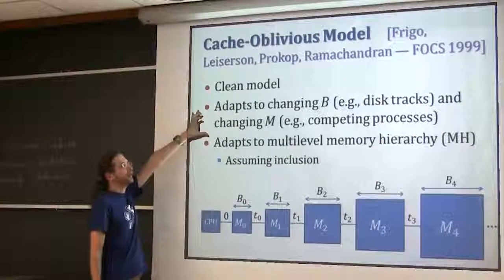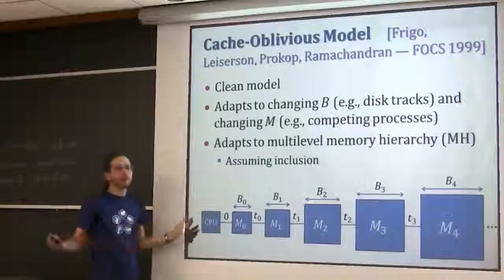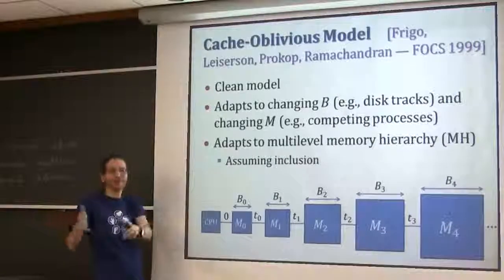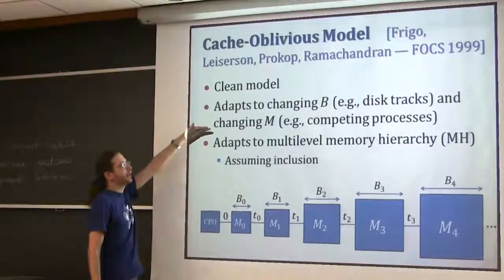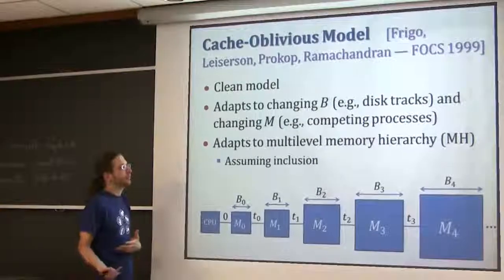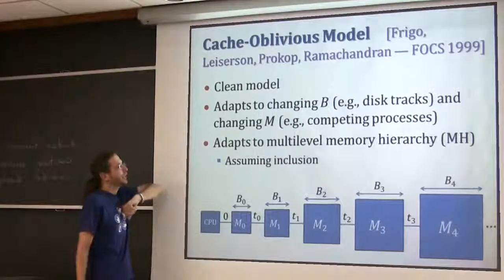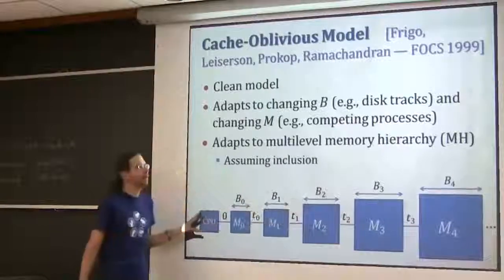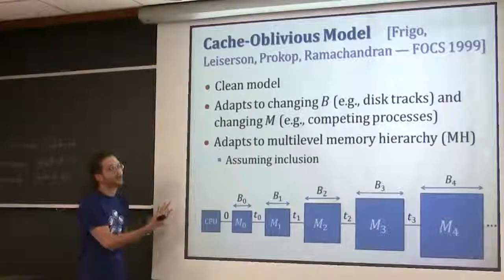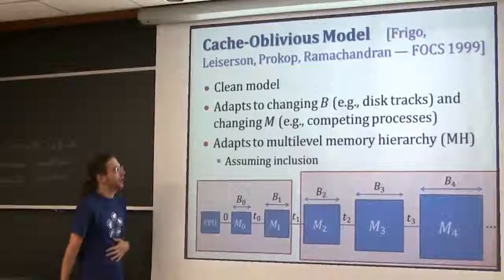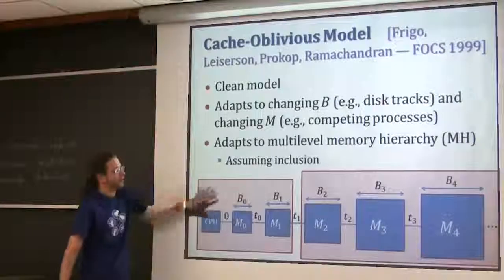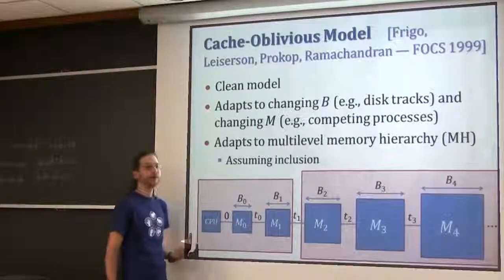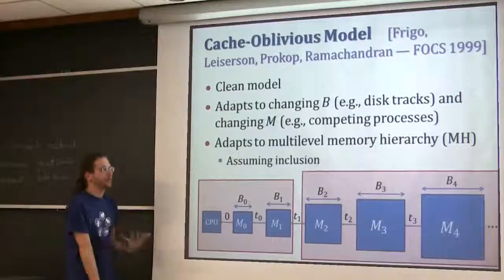I like this model because it's clean. In a certain sense it works for changing B, because it works for all B. Even if B is not uniform - the size of tracks on a disk vary because circles have different sizes - it probably works well in that setting. It also works if your cache gets smaller due to a competing process. And even though you're analyzing on a two-level memory hierarchy, it works on an arbitrary memory hierarchy. A cache-oblivious solution is a clean way to tackle the MH model - the number of transfers over any boundary is optimal, and if that's true for every boundary, the overall thing will be optimal.